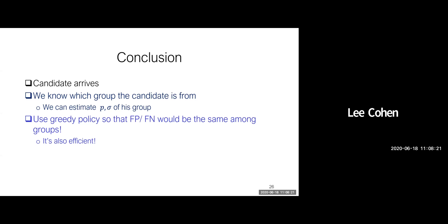In summary, when a candidate arrives, we know which group they are from, so we can estimate p and sigma of their group. The optimal thing to do is use the greedy policy such that false positive rates — and also false negative rates if desired — are the same across all groups we hire from. We know this is the most efficient approach.